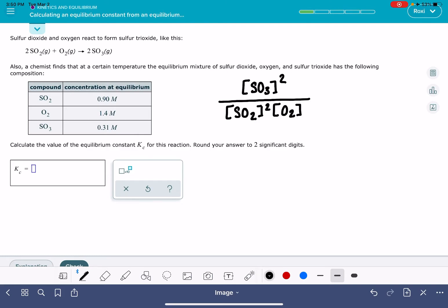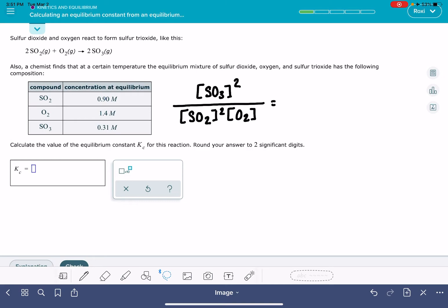Once we get the equilibrium expression written, we can enter the data from the table provided to us. We're plugging in the concentration of SO3, which is 0.31 molar. Don't forget that this is raised to the 2, getting squared. We enter the concentration of SO2, which is 0.9, also getting squared, and the concentration of O2, which is 1.4.